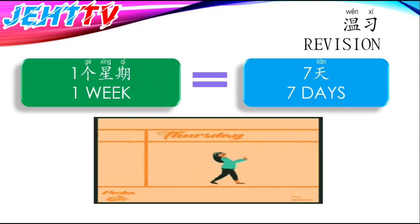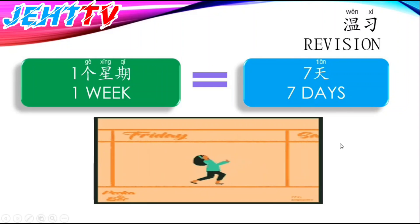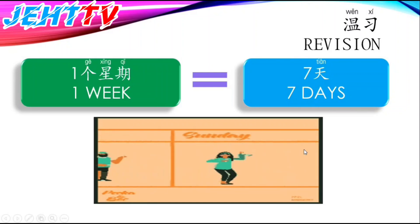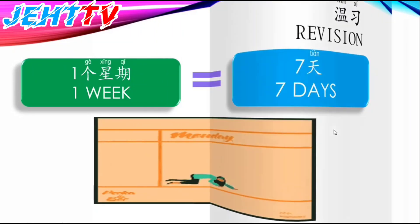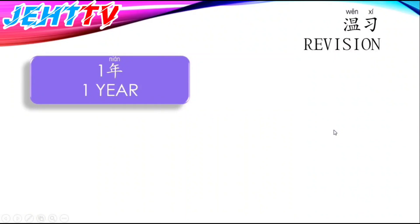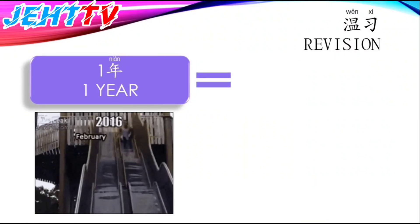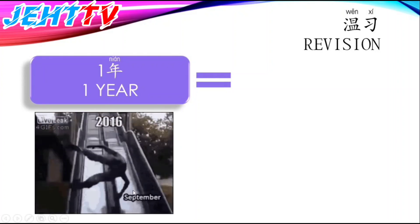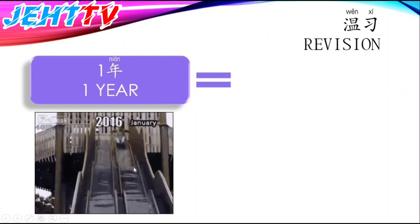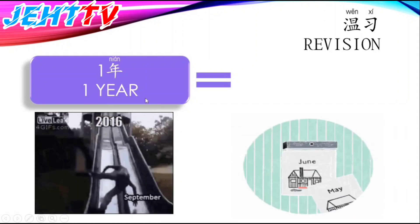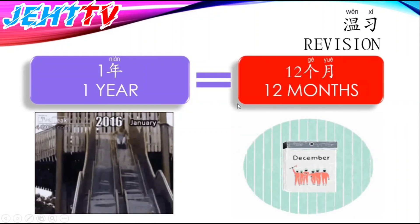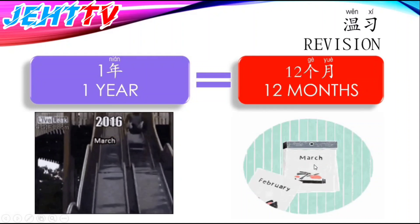One week is equals to seven days, which is Monday, Tuesday, Wednesday, Thursday, Friday, Saturday, and Sunday. Next, we look at one year. One year equals to how many months? One year is equals to 12 months.